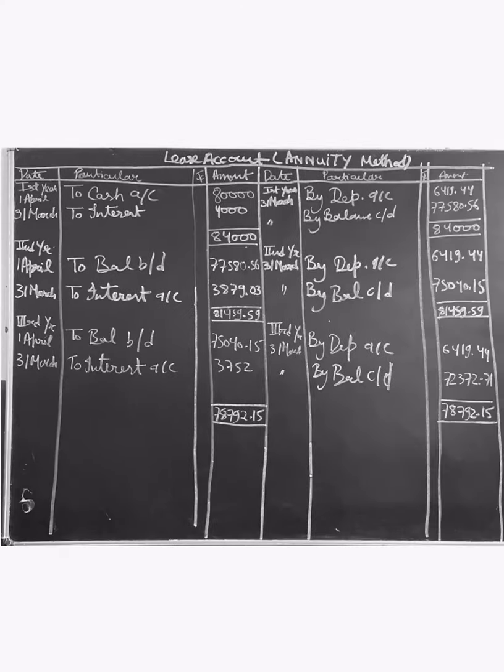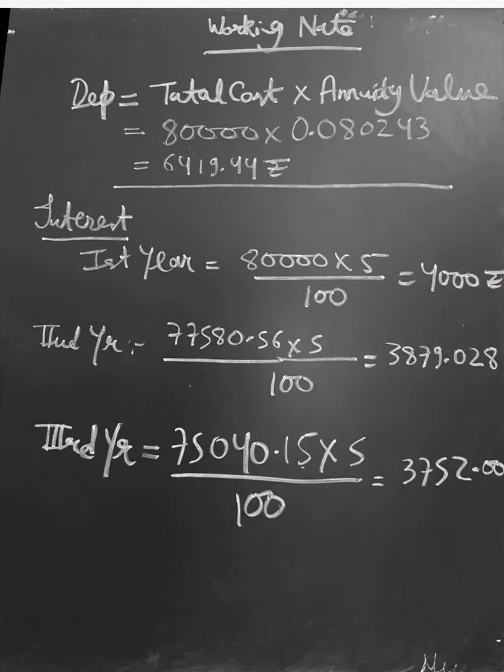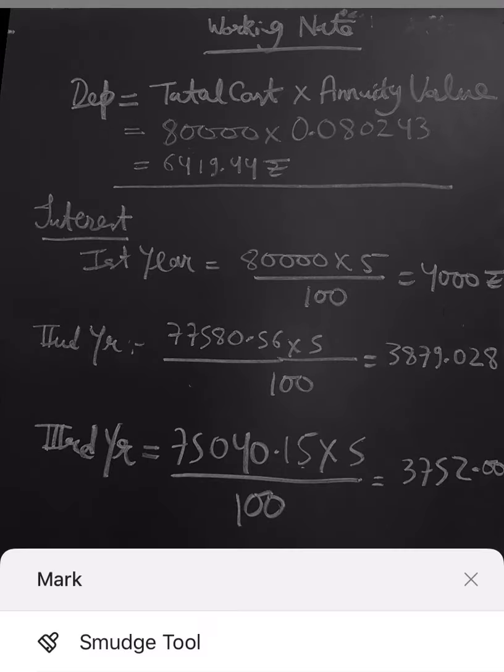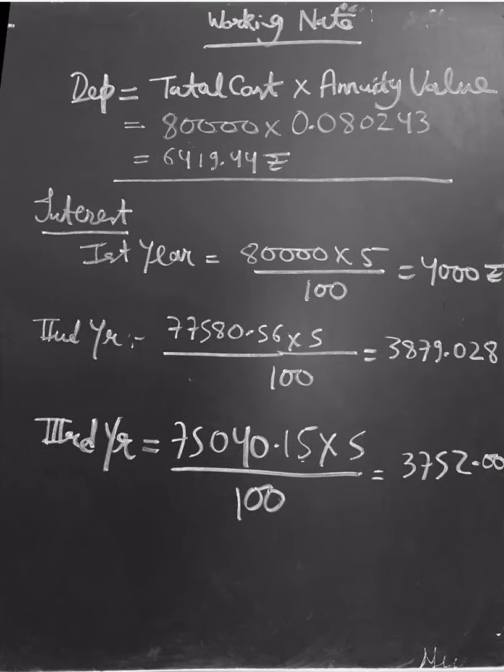First of all, let me show you the working note for calculating the depreciation. Here you can see the formula: total cost multiplied by annuity value.